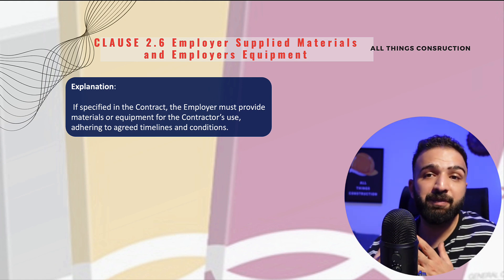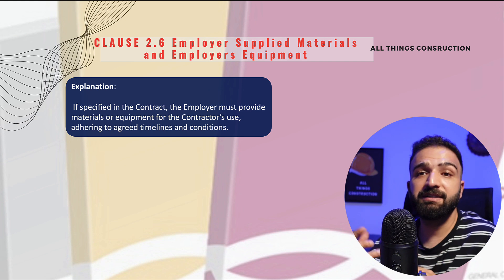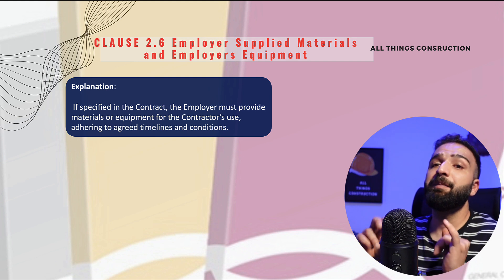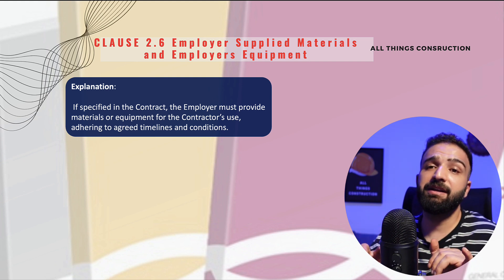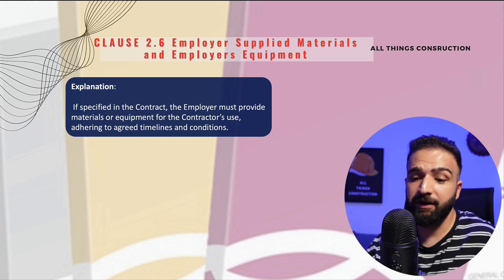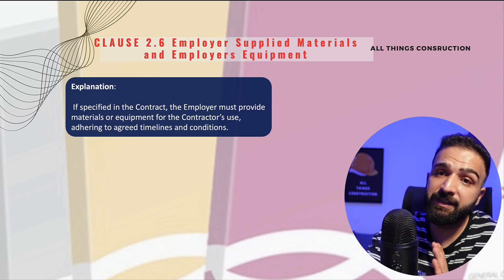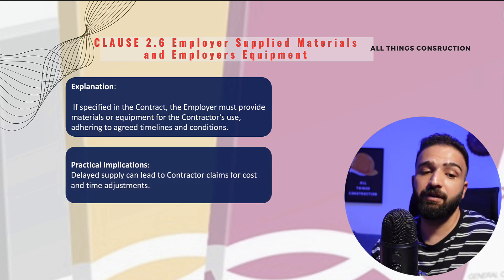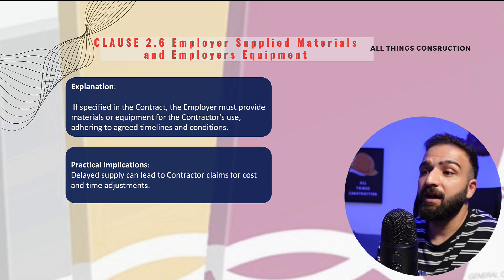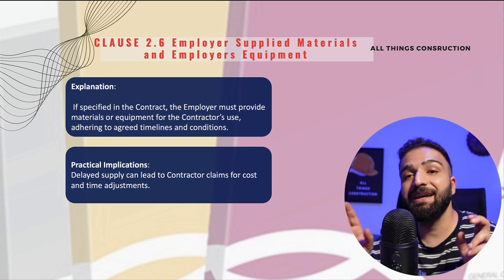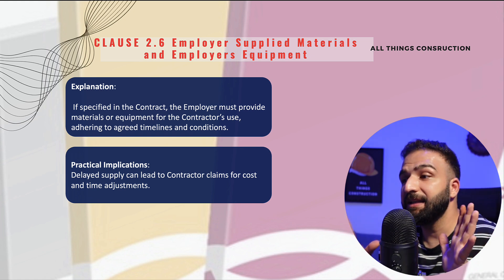Sometimes the employer decides to procure certain materials themselves — maybe for a better price or other reasons — but these materials must be supplied in a timely manner to the contractor. If this does not happen, the contractor will claim for costs and time adjustments. It is very important that the contract specifies exactly the type, quantity and timing of employer-supplied items to avoid ambiguity and disputes.